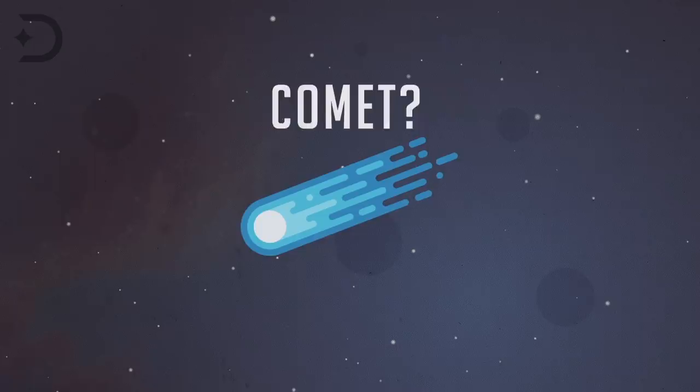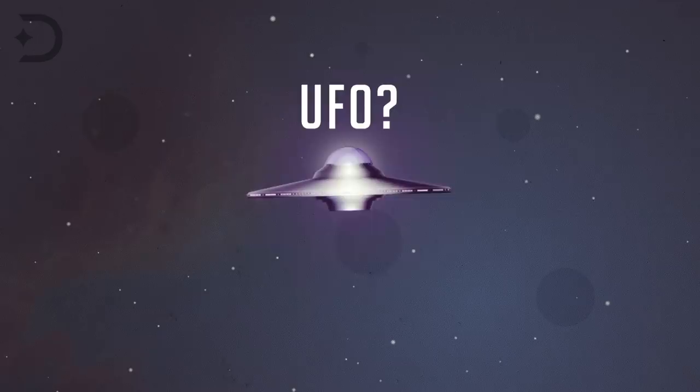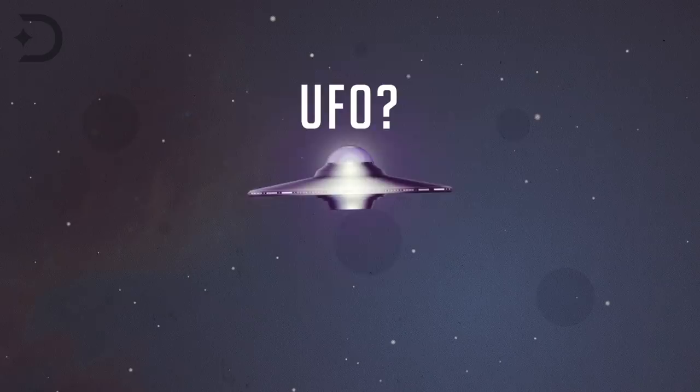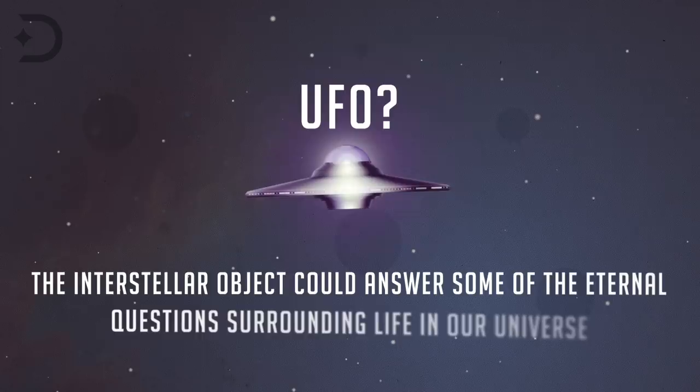But now some say the object may not be an asteroid or comet after all. And as astrologers continue to argue over what it is and what it's made of, there are some that believe Oumuamua is an alien probe sent from another civilization. While that sounds ridiculous, the interstellar object could answer some of the eternal questions surrounding life in our universe.